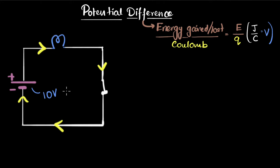Well, it means that when charges move across the battery, they gain energy. So the 10 volt is saying that the charges gain 10 joules of energy per coulomb. So every coulomb that moves across the battery gains 10 joules of energy from the battery. That's all it means.